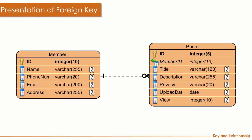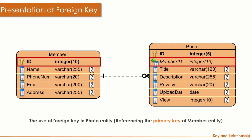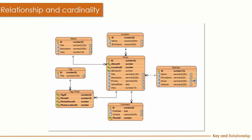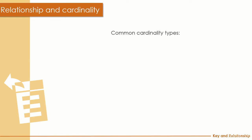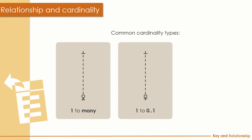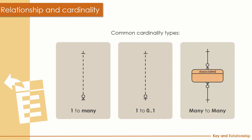In Visual Paradigm, the foreign key is used to uniquely identify the value in another table. Let's move on to relationships and cardinality. We find three common types: one-to-many (most popular), one-to-one or one-to-zero-or-one (optional), and many-to-many.